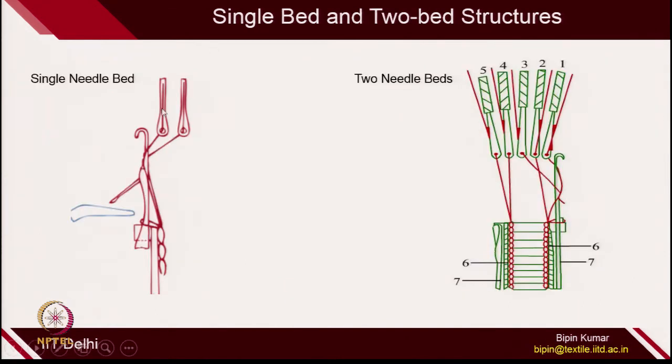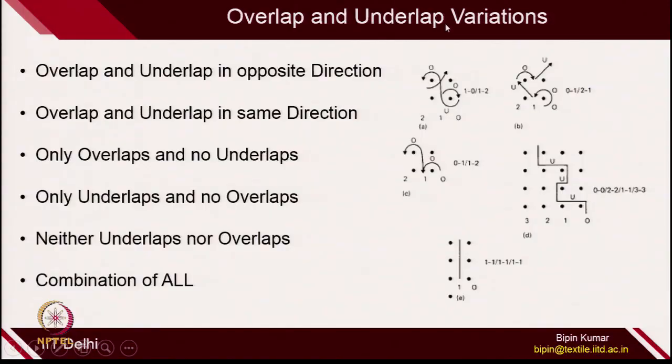The other possibility is single needle bed and 2 needle beds. You can go for 1 set of bed or 2 sets of bed. But if you are creating single bar structure, you don't need 2 beds, because obviously only 1 guide is available with 1 particular needle — there is no need for an extra bed. So single guide bar structures can be created with a tricot machine having 1 set of needle, 1 set of sinker, and 1 set of guides. After that, you can go for overlap and underlap variations.